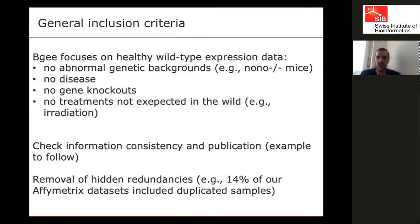We check a lot for information consistency. I'll give you examples of how deep we go into digging into papers to be sure the data are high quality. Because we are a secondary database — not a primary one like SRA, which has to accept everything — we can be picky. We take only the highest quality data available and perform quality control.